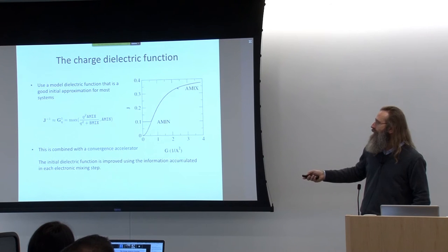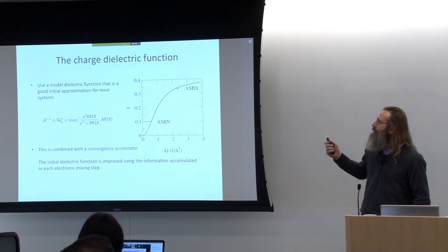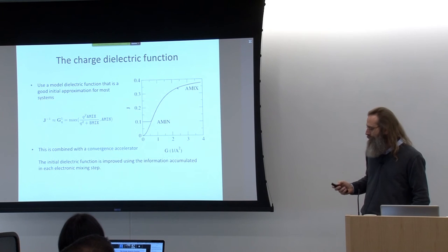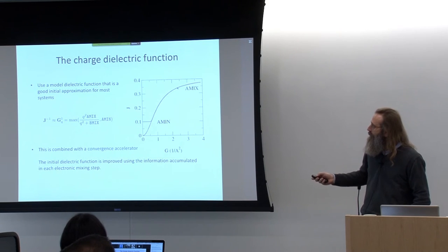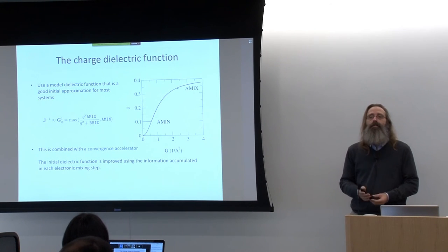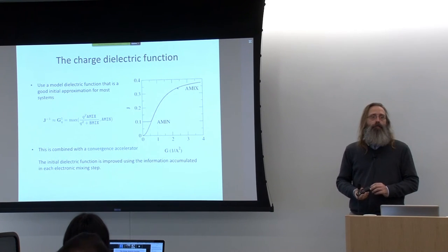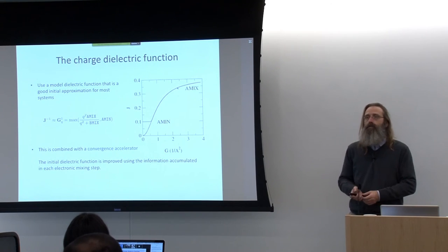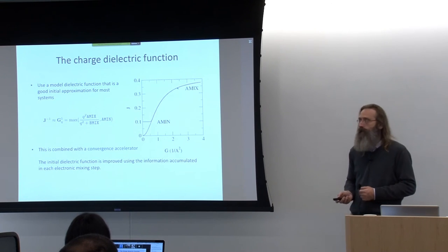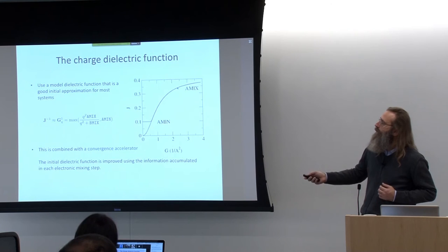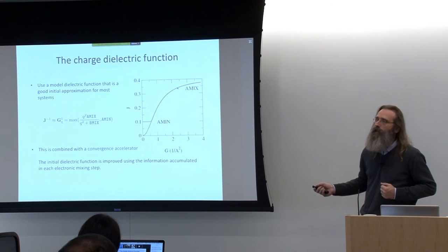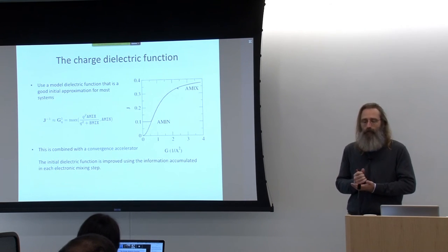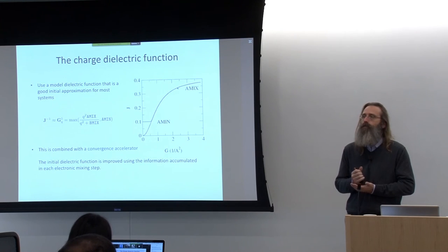There are defaults for these parameters, but they would not work equally well always. That is one of the things you might want to try playing with when you see your system is not converging as rapidly as you'd like. Where does this pose a problem? For instance, in magnetic systems — the mixer is learning about the response of your system, but the strongest response is the electrostatic response. The relaxational modes of the magnetic system are often of a completely different order of magnitude in total energy, so the constructed mixing function will not be very effective at mixing the magnetization density.